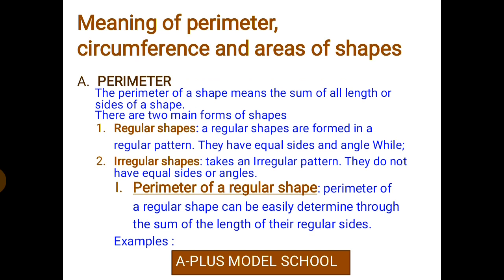Example of an irregular shape: we have a scalene triangle, which has no equal sides or angles. Let's look into the perimeter of an irregular shape. Perimeter of an irregular shape can be easily determined by adding all the sides of the irregular shape together.